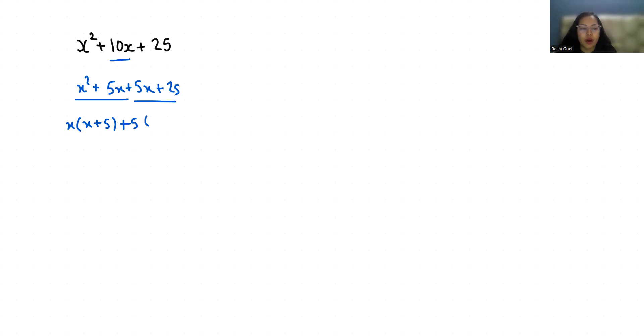Now (x + 5) is common, so we have (x + 5)(x + 5). These are the factors.